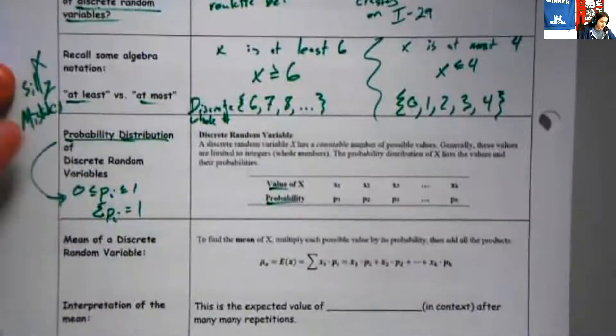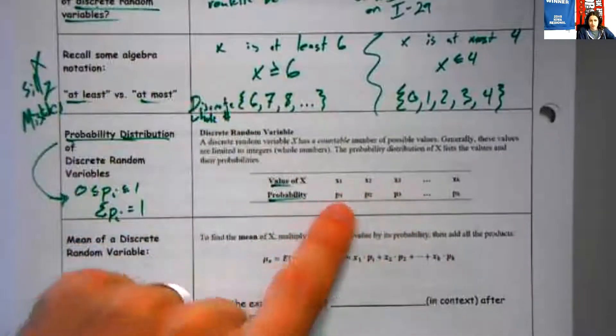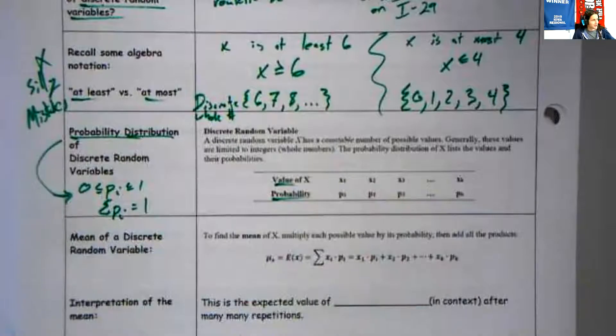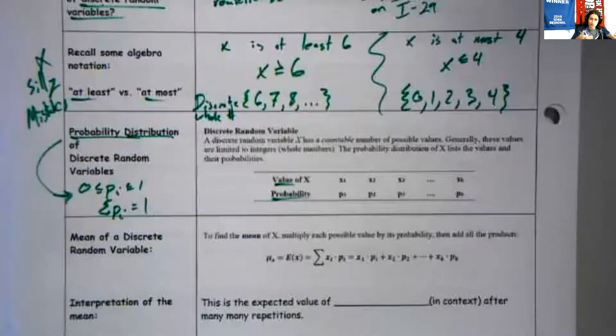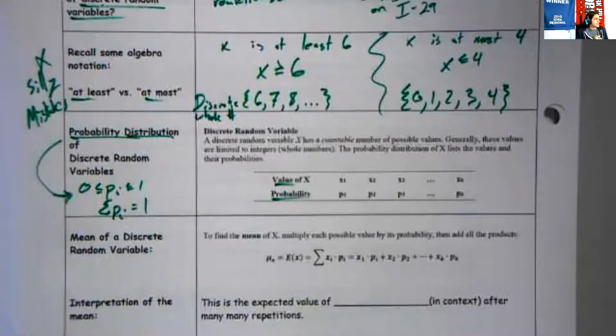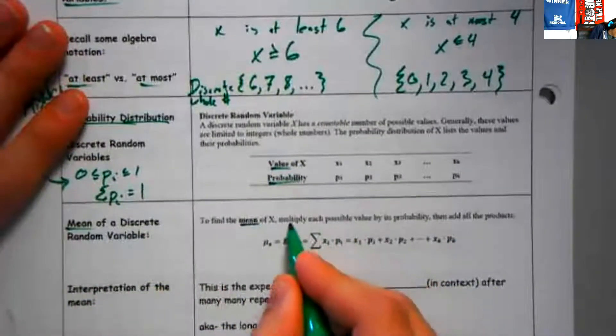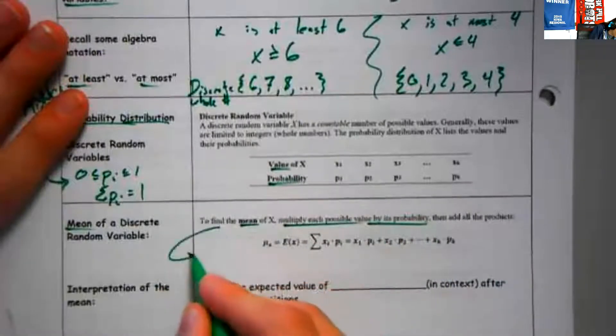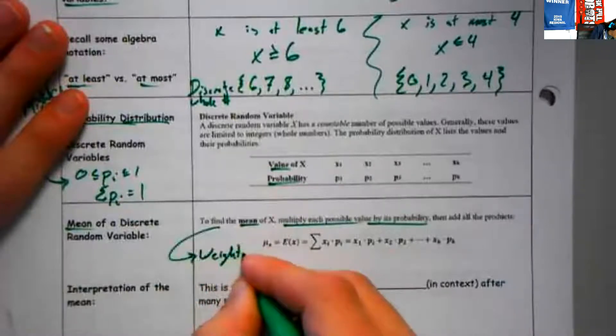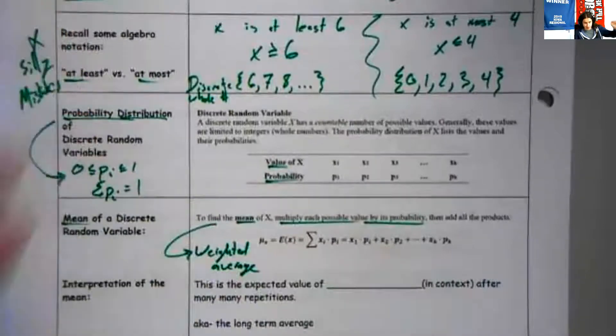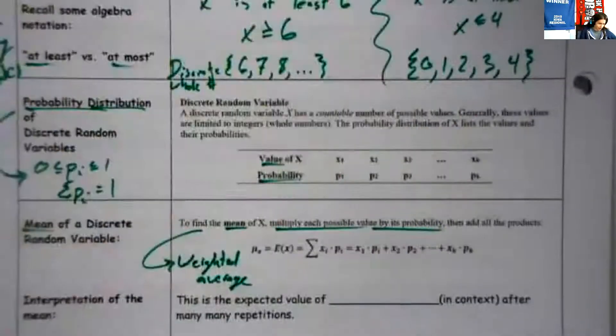There are values of number of patients, numbers of car crashes, numbers of money won, whatever, and the probabilities associated with them. How do we find those probabilities? Maybe we see them empirically, we look. Maybe we calculate them theoretically. So how do we find the mean of a discrete random variable?